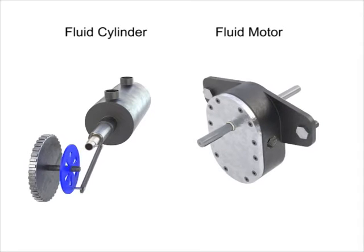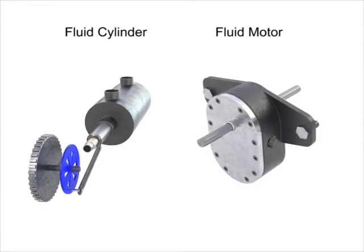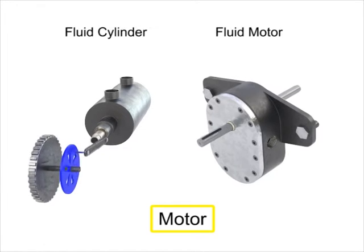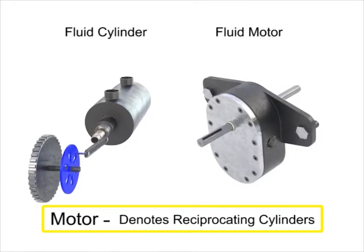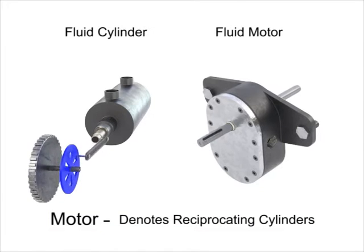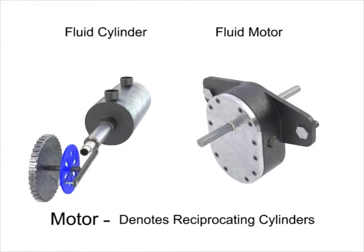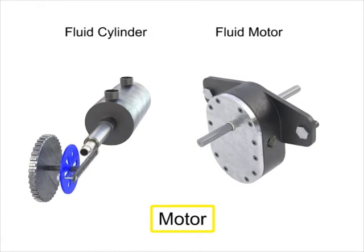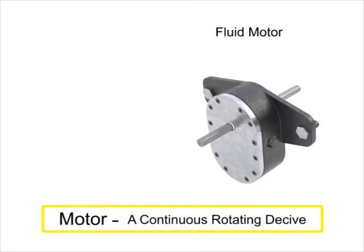The term fluid motor is normally used to identify those devices which deliver continuous rotary power output when supplied with fluid under pressure. The term motor is sometimes used by manufacturers to denote reciprocating cylinders. Technically, this is a correct usage but can lead to a misunderstanding of the type of actuator to be used. For the remainder of this video, we'll use the term motor to describe a continuous rotating device.